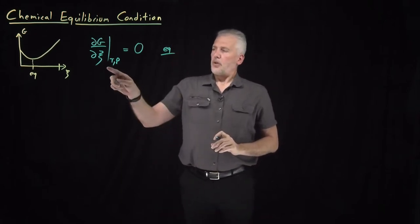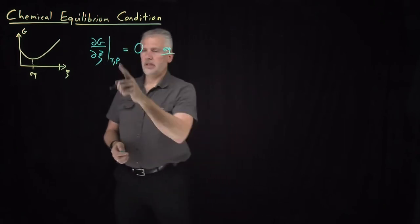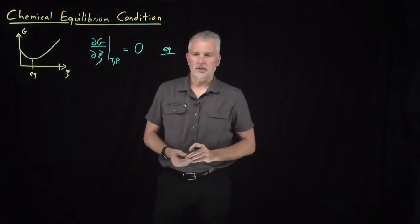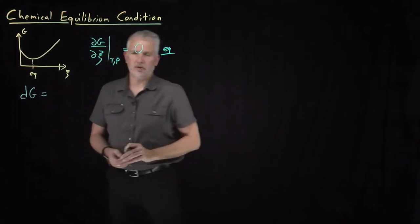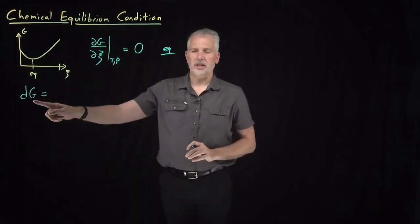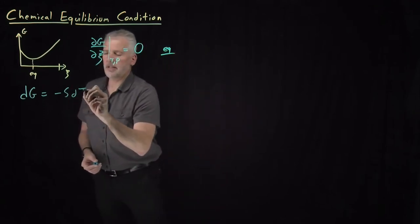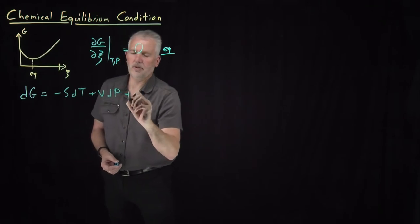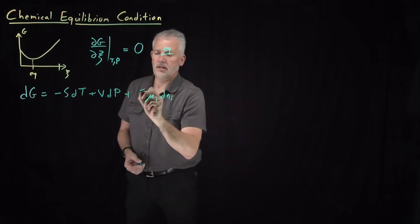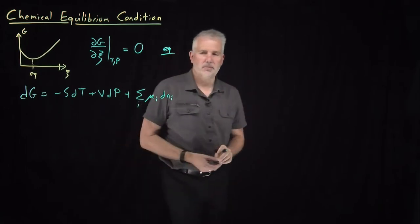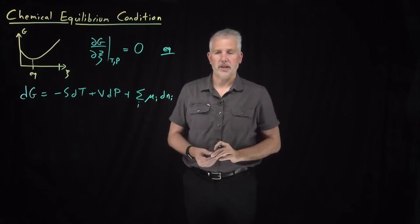In order to understand how to use that in an actual chemical system, let's see if we can understand what this equilibrium condition means. We can start with the fundamental equation for the differential change in the Gibbs energy: dG = -SdT + VdP. Since we have a multi-component system, I need terms that look like chemical potential times the change in number of moles for each of the species, each of the components in my chemical reaction.